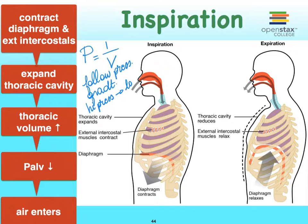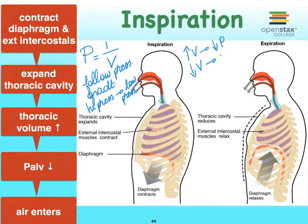So how can we create this kind of a gradient? Well, if we increase the volume, then we're going to decrease the pressure, and vice versa — when we decrease the volume, we're going to increase the pressure.